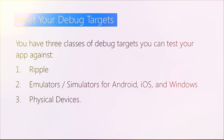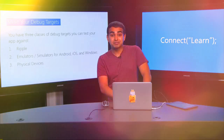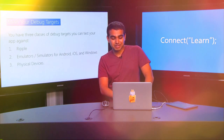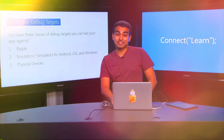You have Ripple, which is the browser-based simulator you saw earlier as part of our Hello World demo. You have emulators and simulators for all platforms — iOS, Android, and Windows. And you also have physical devices. In this video, I'm going to take a simple application and show you how to both preview and debug across all three classes of debug targets.